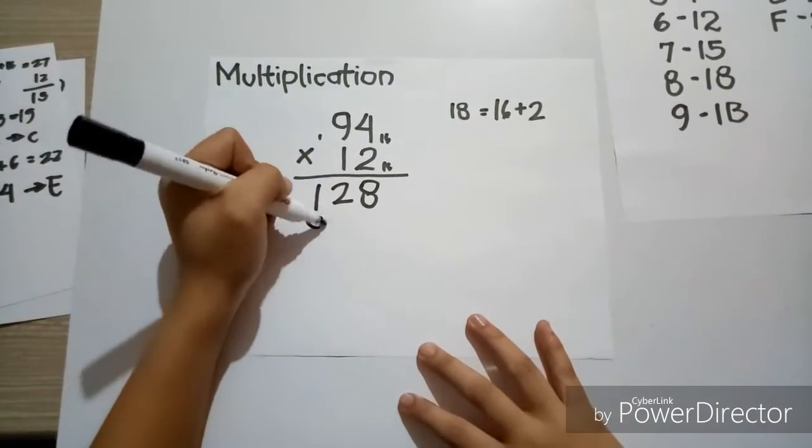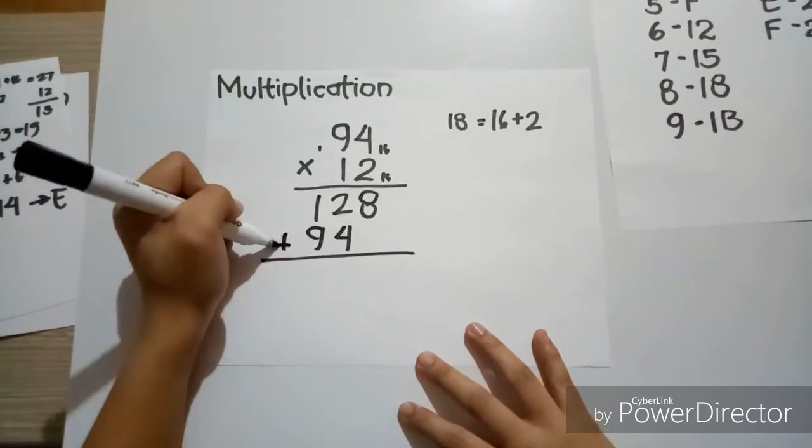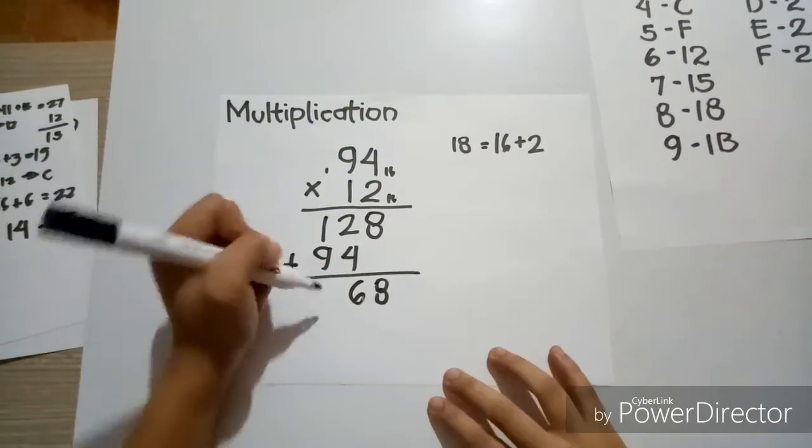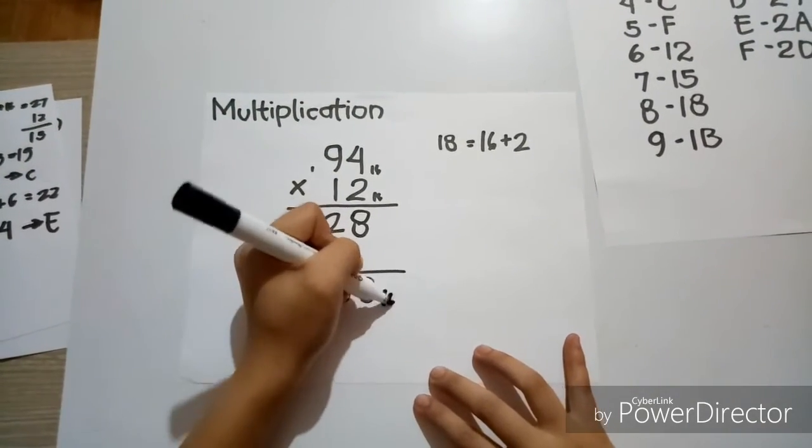Now, 4 times 1 is equal to 4. Now, adding them, let's bring down 8. Then 4 plus 2 is 6. And 9 plus 1 is 10, which is represented by A. And that's it.